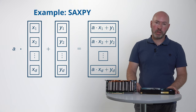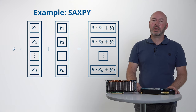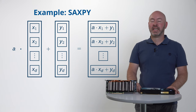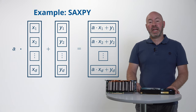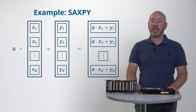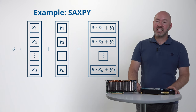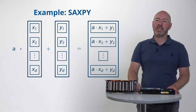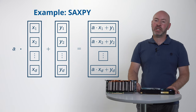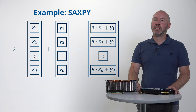Now we will introduce a frequently encountered example problem: the SAXPY. SAXPY stands for single precision a times x plus y, where x and y are vectors and a is a scalar. In a series of upcoming videos, we will explain the implementation of a SAXPY kernel using different programming languages and libraries.